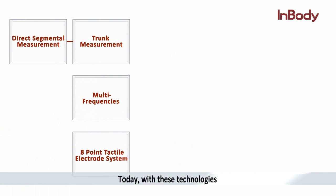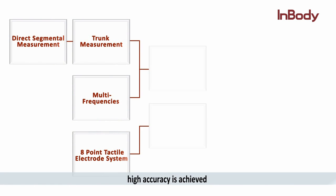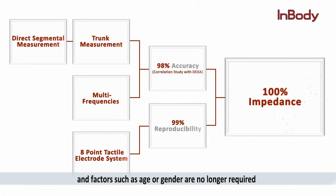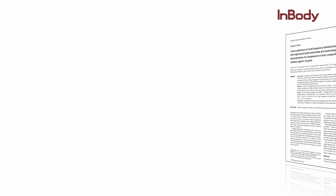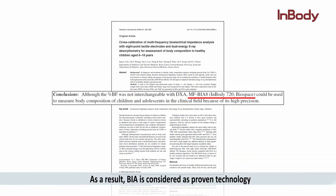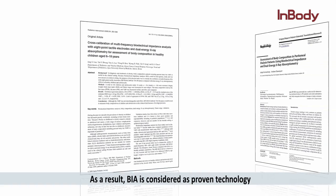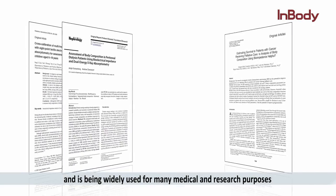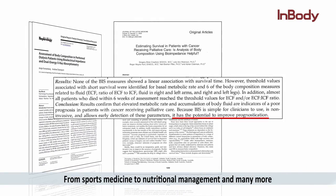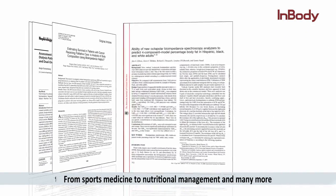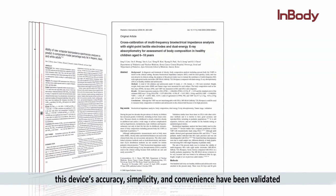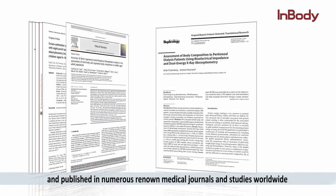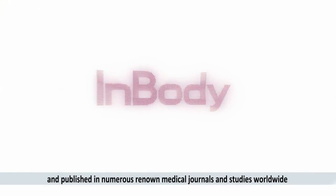Today, with these technologies, high accuracy is achieved and factors such as age or gender are no longer required. As a result, BIA is considered proven technology and is being widely used for many medical and research purposes — from sports medicine to nutritional management and many more. This device's accuracy, simplicity, and convenience have been validated and published in numerous renowned medical journals and studies worldwide.